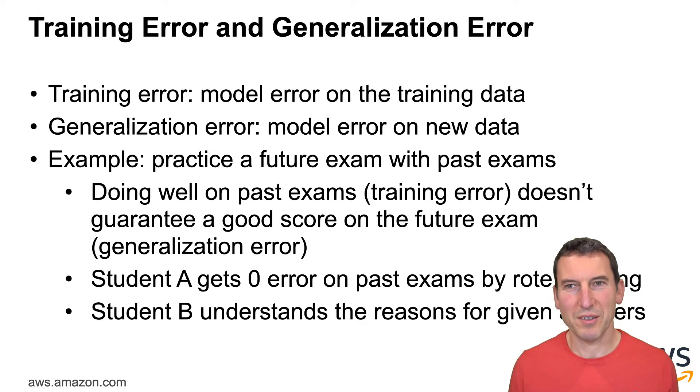So here's the story. The training error, as we already looked at, is basically the model error on the training data. And the generalization error is the model error on new data. Now, why are those things different? Well, you can easily imagine, suppose you practice for a future exam with past exams. If you do that very diligently, then at some point you're going to do really well on those past exams.